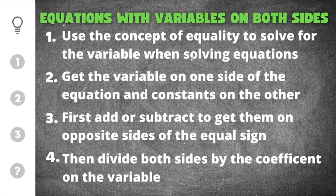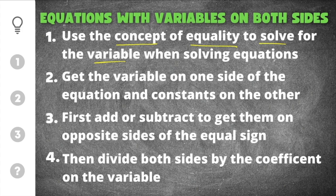We have four important things we need to remember when solving equations with variables on both sides. The first thing we need to know is that the concept of equality is going to be used to solve for the variable. The concept of equality is commonly referred to as whatever you do to one side, you also have to do to the other. When you're solving equations, what you're trying to do is get x equals a number. Once you have x equals a number, then you know that is your solution.